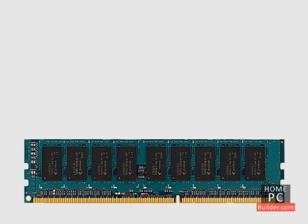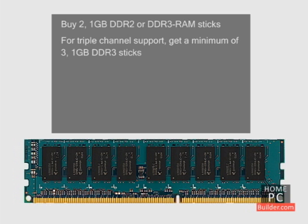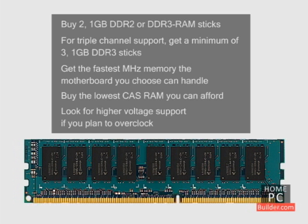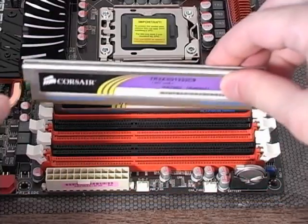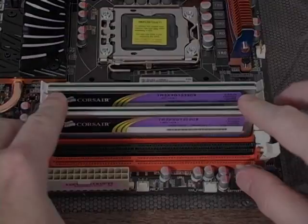When you purchase your computer's memory, look for two 1GB minimum DDR2 or DDR3 sticks in a package to enable dual-channel on the motherboard. If the motherboard supports triple-channel memory, get a minimum of three 1GB DDR3 sticks in a package. Get the fastest MHz memory the motherboard can handle, buy the lowest CAS RAM you can afford, and look for higher voltage support if you plan to overclock. In the installation lessons, we'll go over how to install the memory sticks onto the motherboard.